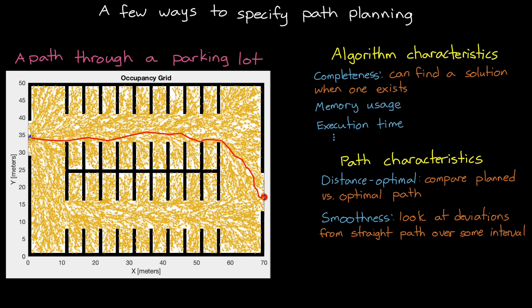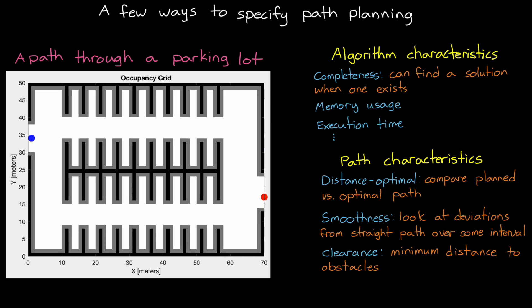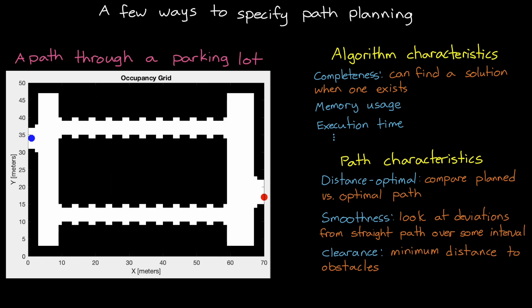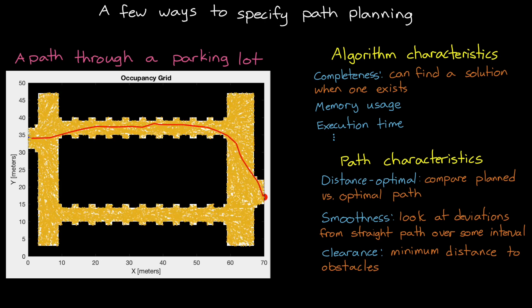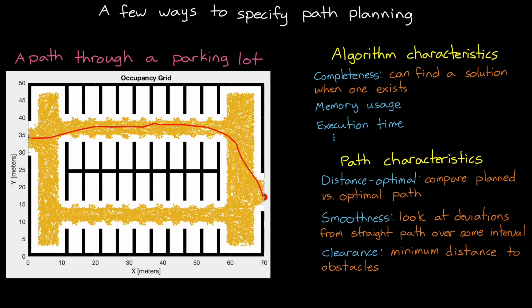Now, even if the path is smooth and it reaches the goal, it might not be good if it passes within a few inches of another car or some other obstacle. It could be scary for both the occupant and the outside observers. Therefore we may also specify a minimum clearance. And one way to guarantee clearance is to use an inflated representation of the obstacles when planning. The resulting path, if we look at it in the original map, now clears the obstacles by at least the amount of the inflation.